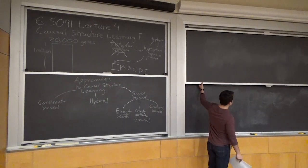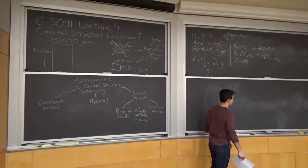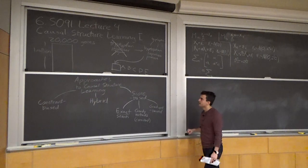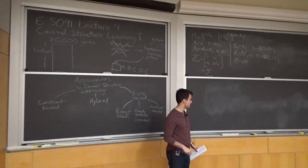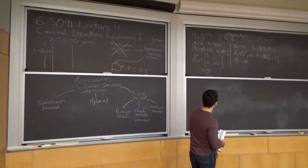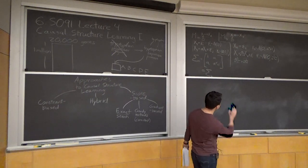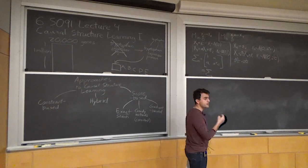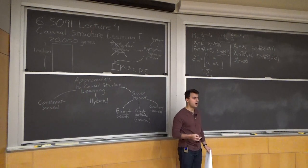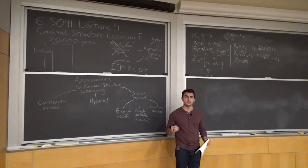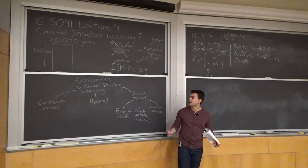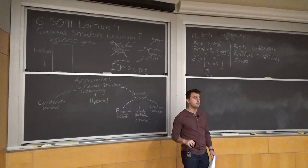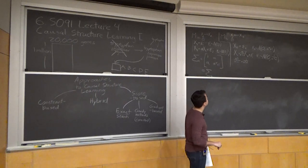That takes us through a high-level view of some of the types of algorithms we might consider, as well as the type of identifiability guarantees. Before diving into the details of identifiability guarantees — which is the main subject of today's lecture — I'll motivate it by showing how we might go about identifying a causal model. This will generalize into a constraint-based algorithm called the Peter-Clark algorithm, or PC algorithm, that we'll discuss in the next lecture.